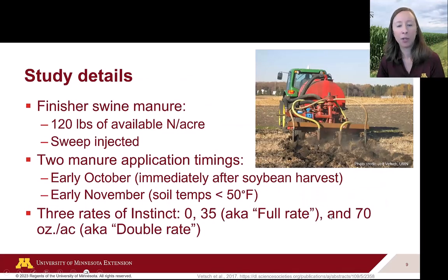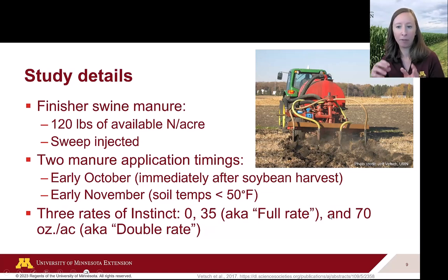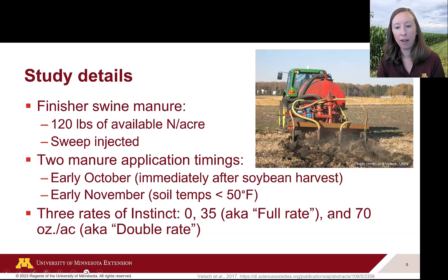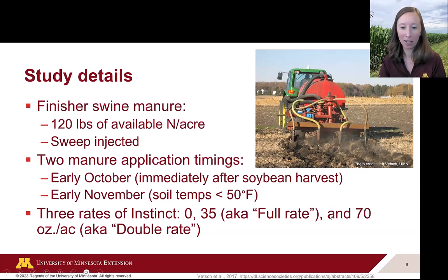They used finisher swine manure, injecting 120 pounds of first-year available nitrogen per acre, and tested application timing: before soil temperatures drop below 50°F versus when soil temperatures are below 50°F. Early October, immediately after soybean harvest when soils are still warm, and early November when soils had cooled. Within each timing they tested three rates of Instinct: zero (none), 35 oz/acre (the manufacturer's full rate), and 70 oz/acre (a double rate).